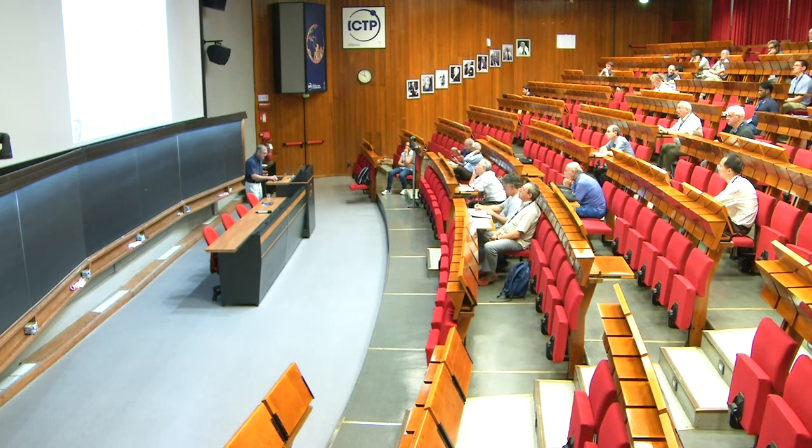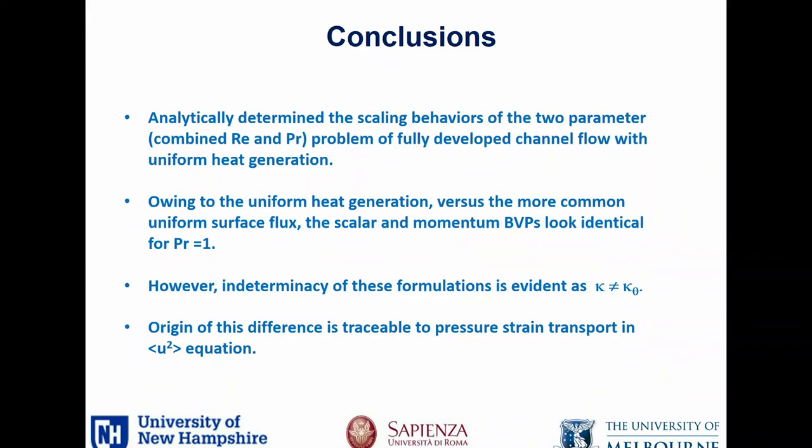You can go to the transport equation for the u fluctuations and compare it to the scalar transport equation. For the u fluctuation transport, you see these pressure terms, whereas in the scalar one you don't. Other people have noticed this but not in the context of the solution to the mean flow equation, which we're able to show here. In conclusion, we've analytically determined the scaling behaviors for the two-parameter combined Reynolds number and Prandtl number problem for the fully developed channel flow with uniform heat generation. Again, I think this was a very clever simulation, and owing to the uniform heat generation versus the more common uniform surface heat flux, the momentum and scalar equations look identical for the Prandtl number equal one case, yet give different solutions — and the origin of this difference is traceable to the pressure-strain transport in the u equation. Thank you.